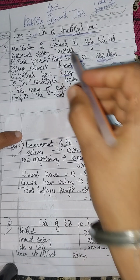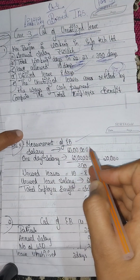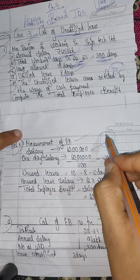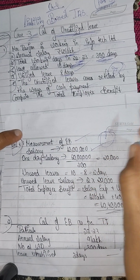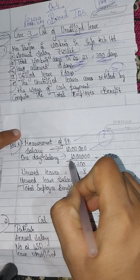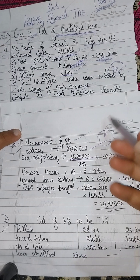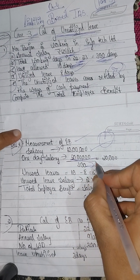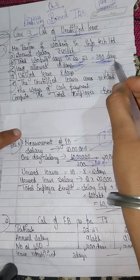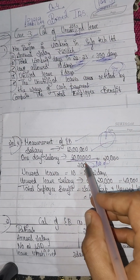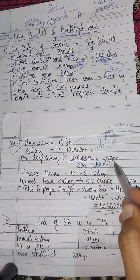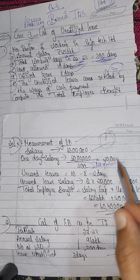We need to calculate the salary. Annual salary is 60 lakhs. One day salary is equal to 60 lakh divided by the number of working days, which is 300. So 60 lakh divided by 300 equals 20,000 rupees per day.